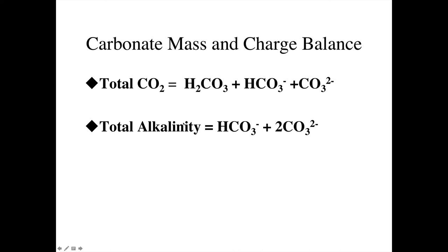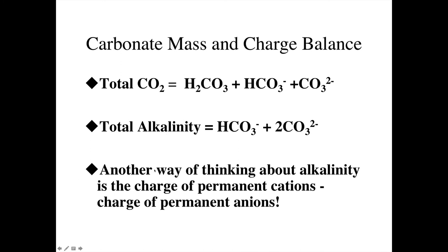Mass balance and charge balance. Because alkalinity is a charge balance, we can also think of it as the charge of the permanent cations minus the charge of permanent anions. Some students find this more intuitive, particularly as you think about diluting a system through rain or concentrating a system through evaporation. Alkalinity as charge balance is therefore the permanent cations minus the permanent anions.